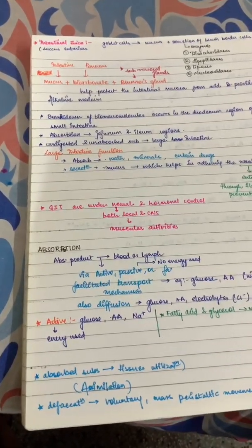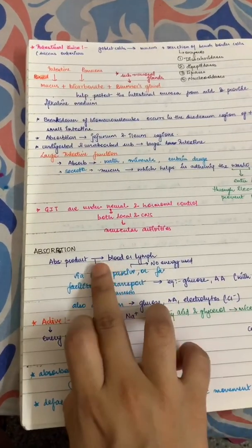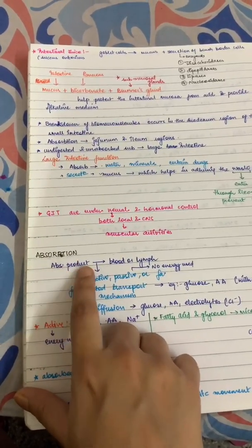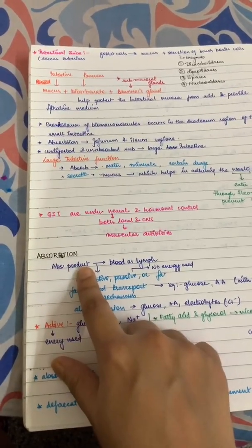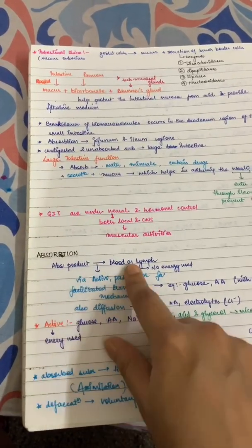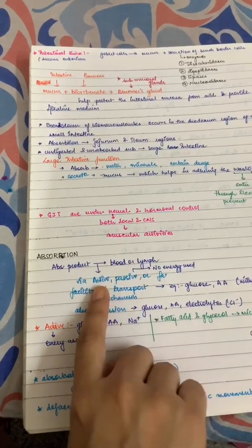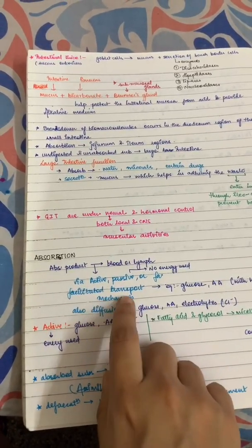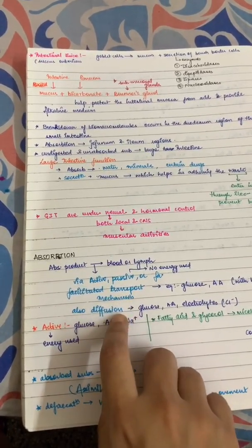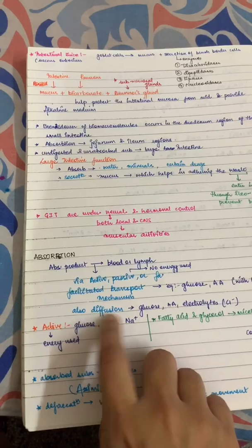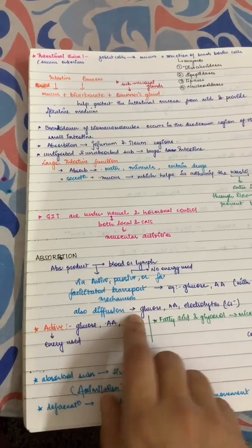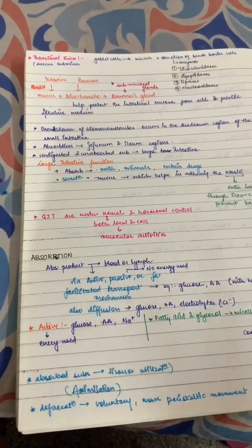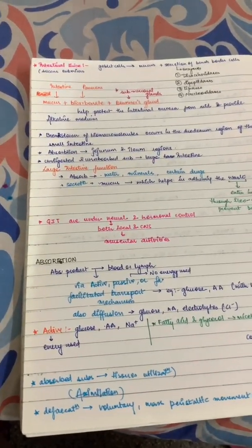Now we come to absorption. Absorption means the absorbed products go into the blood. This occurs through active transport, passive transport, and facilitated transport, as well as diffusion and osmotic gradient.